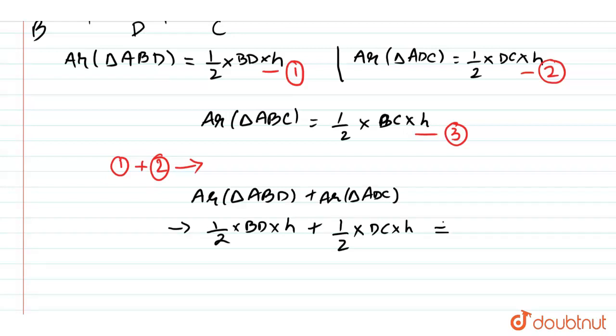Let us take the half and H as common. So this would be half into H into BD plus DC. So this would be the equation. But we know BD is equal to DC because the median cuts that side of the triangle into two equal parts.